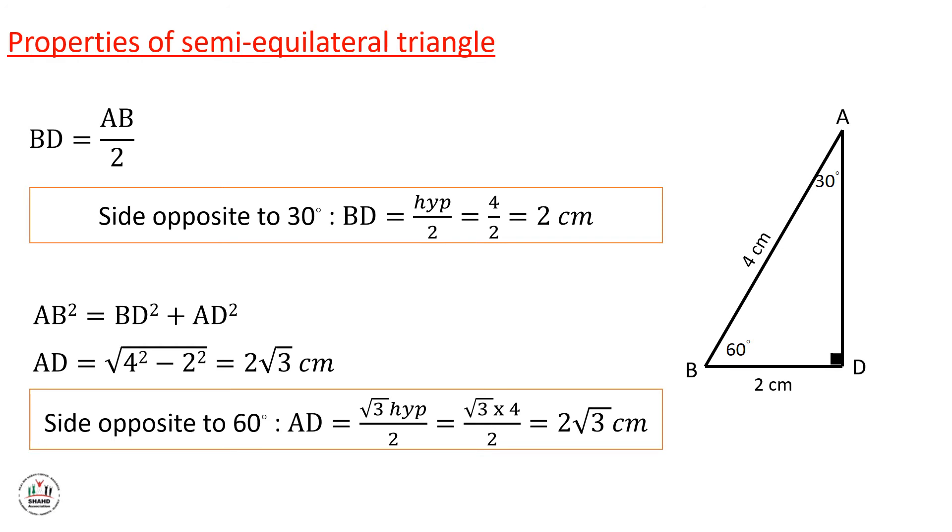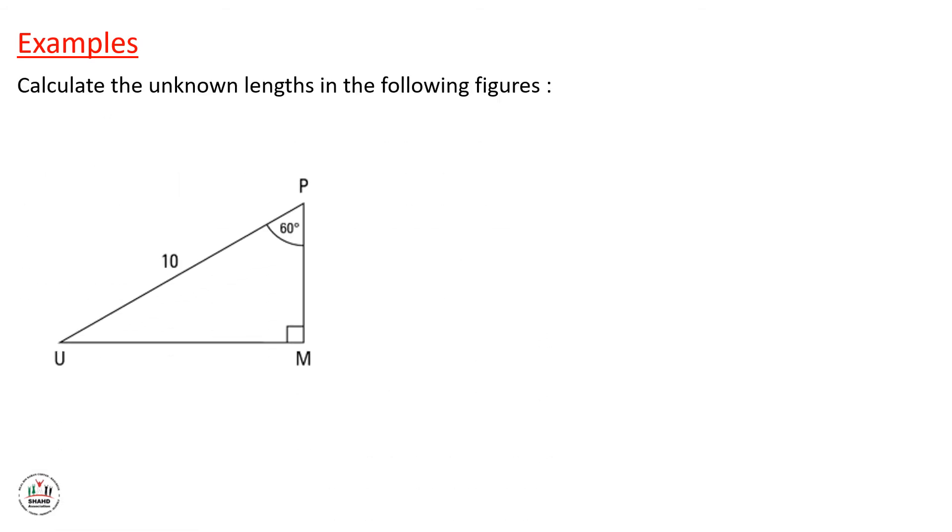So we have two properties. And now let's solve an exercise. Calculate the unknown length in the following figure. We have the first figure, we have 90 degrees at M.